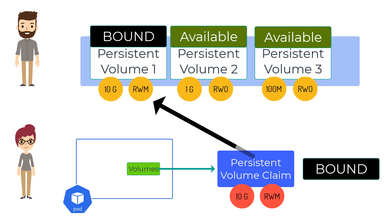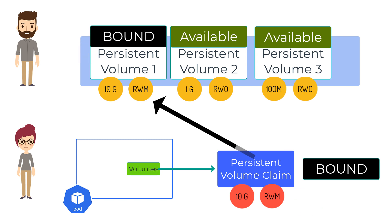But let's say the app team doesn't want the persistent volume claim to pick from a pool of randomly available persistent volumes, but instead wanted to pick exactly the persistent volume created for that specific app. The way they would do this is using a label selector. Once the labels on the persistent volumes and the label selector on the persistent volume claim match, the persistent volume gets bound to the persistent volume claim. Remember, persistent volumes are not namespaced, but the pods and the persistent volume claims need to be in the same namespace. The pod is now able to store data in a persistent volume outside of a pod lifecycle.